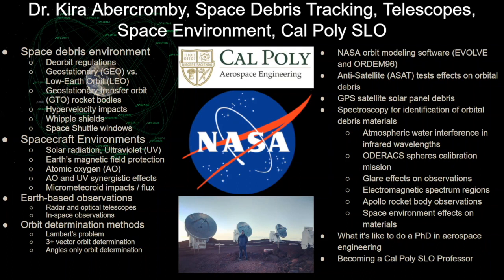Then we go into space environments: solar radiation, ultraviolet light, Earth's magnetic field protection from radiation, atomic oxygen in the upper atmosphere, synergistic effects between atomic oxygen and ultraviolet light, and micrometeoroid impacts and flux. Then we get into Earth-based observations — the difference between radar and optical telescopes — and also in-space observations. We cover orbit determination methods using position vectors, range and range rate, or angles-only data, and NASA orbit modeling software called EVOLVE and ORDUM-96, plus a look at anti-satellite (ASAT) test effects on orbital debris.